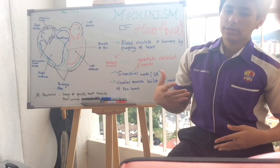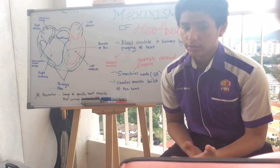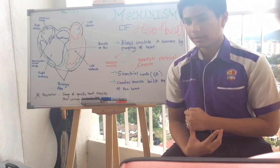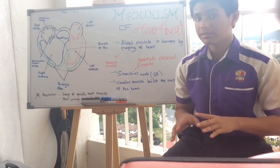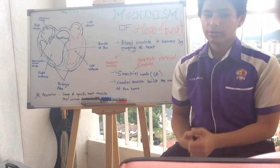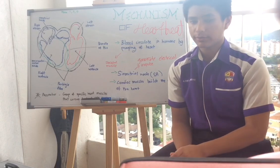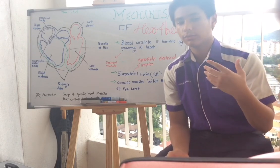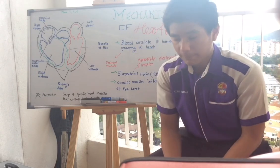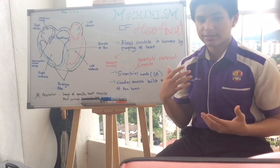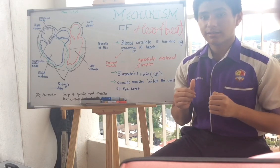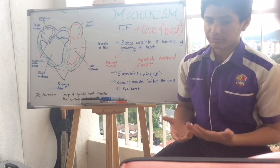The pumping of the heart helps distribute blood flow through the arteries, arterioles, and blood capillaries. Arterioles are smaller versions of arteries. However, the force produced by the heart is insufficient for blood to continue flowing through the veins and return to the heart, due to the effect of gravity and the presence of valves in the veins.